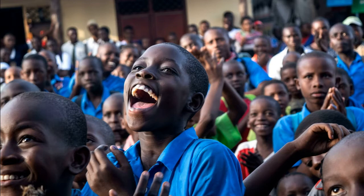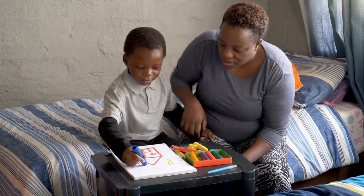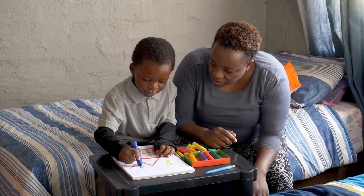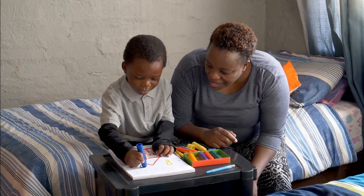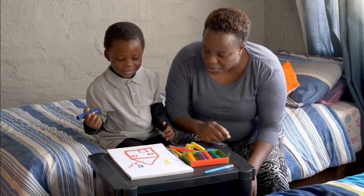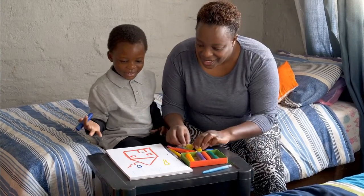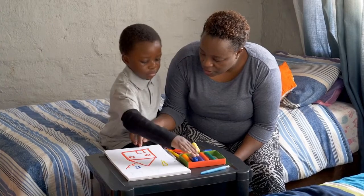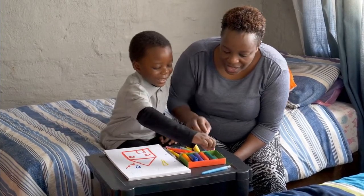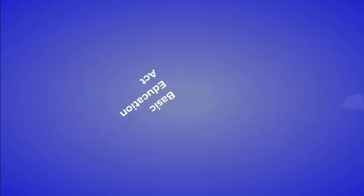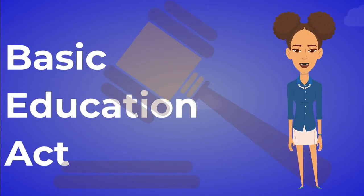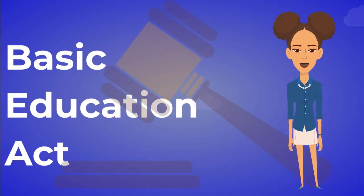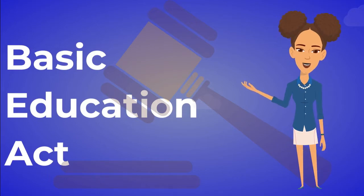Article 53 of the Constitution of Kenya guarantees every child's right to free and compulsory basic education. Further, it seals the fact that the child's best interest shall be maintained under all circumstances. Kenya's Basic Education Act of 2013 was passed to implement this requirement and protect all children, with or without disabilities.